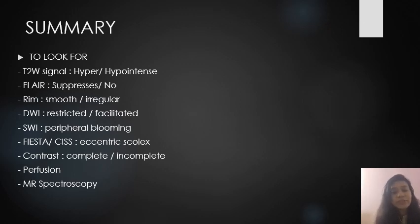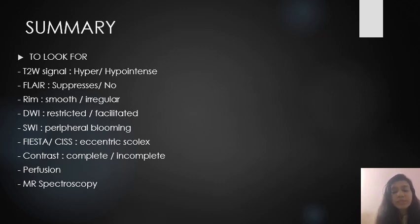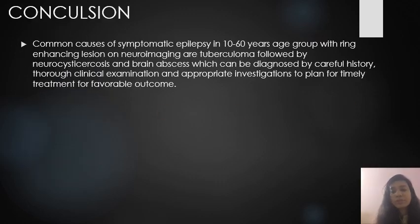In summary, how to evaluate a ring enhancing lesion: assess T2-weighted signal — hypo or hyperintense; FLAIR restriction — present or not; rim — smooth or irregular; DWI — restricted or facilitated; SWI — blooming or not; FLAIR — eccentric scolex present; contrast — complete or incomplete enhancement; then perfusion and MR spectroscopy.